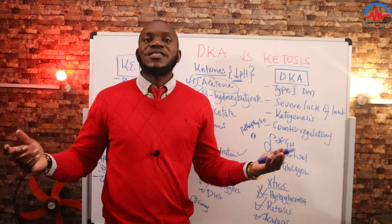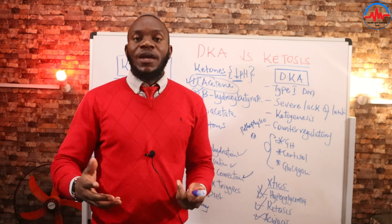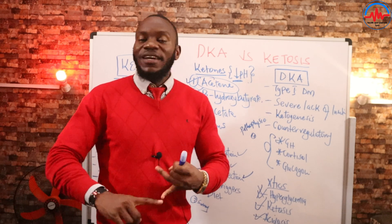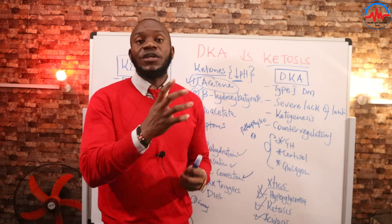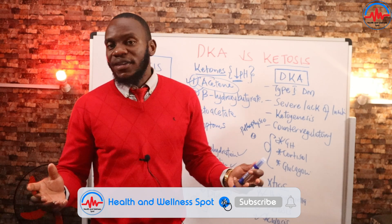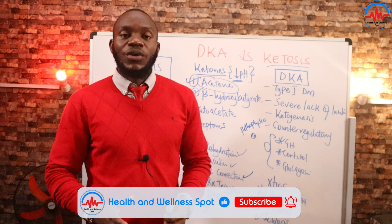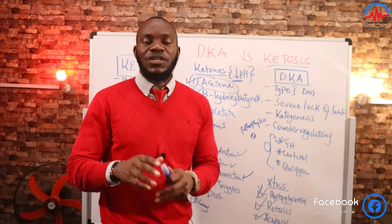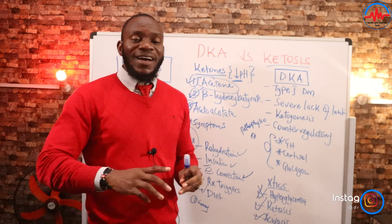In summary: DKA is a life-threatening condition of diabetes type 1, sometimes type 2, characterized by hyperglycemia, ketosis, and acidosis — the ketosis leads to acidosis, causing all the symptoms I mentioned. On the other hand, ketosis is just a normal physiological mechanism that provides energy alternatively to glucose intake. If you don't have glucose intake, you turn to ketosis to get energy. Do not confuse the two.